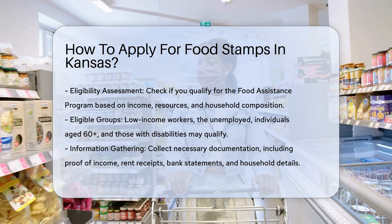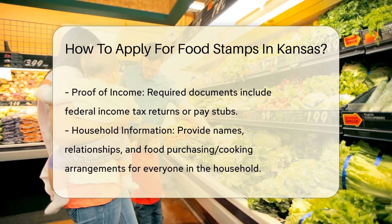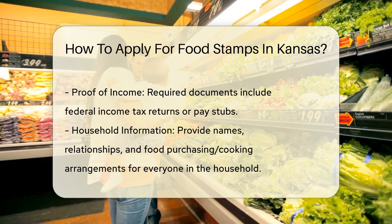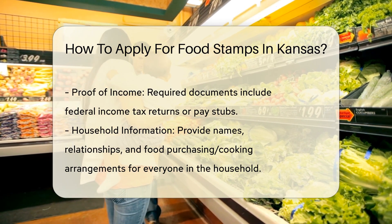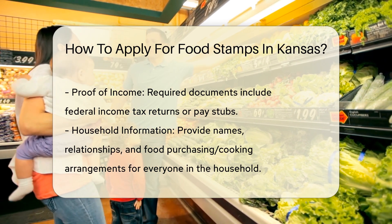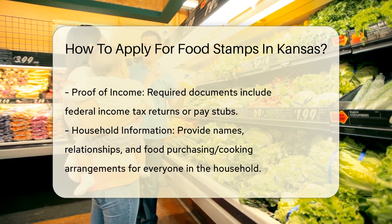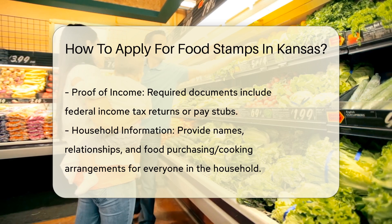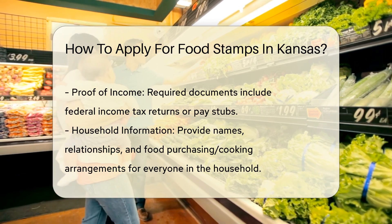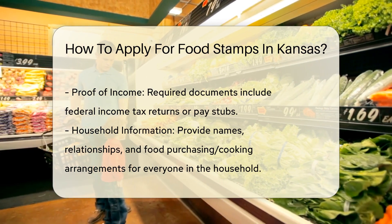Step 2: Gather required information. You will need to provide various pieces of information and documentation. This includes proof of income, such as federal income tax returns or pay stubs, rent receipts or house payments including insurance and property taxes, bank statements for checking and savings accounts, verification of pregnancy if applicable, and information about everyone living in your household, including their names and relationships to you.